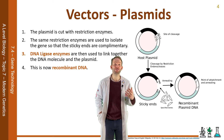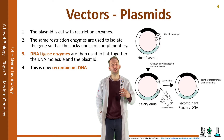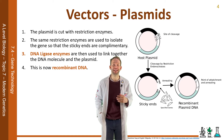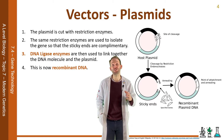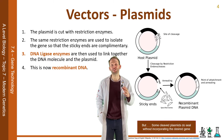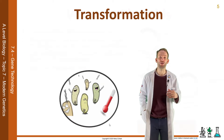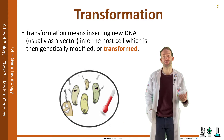Plasmids are used naturally for exchange of genes between bacterial cells, so bacterial cells will readily take up the plasmid because they're used to doing that process. Transformation means inserting new DNA, used as a vector, into the host cell, which is then genetically modified or transformed.